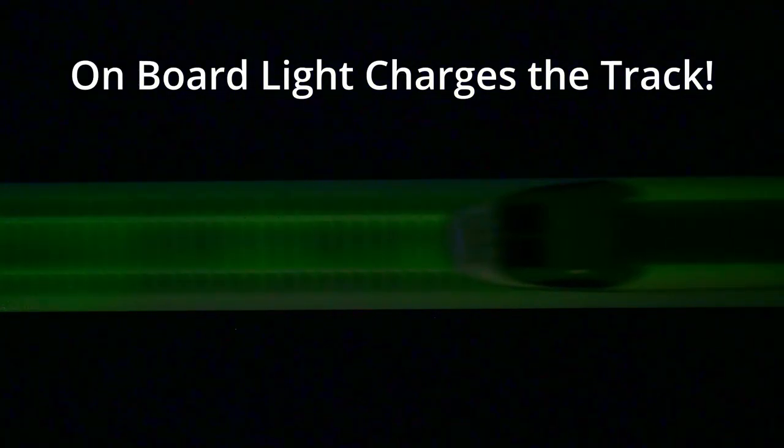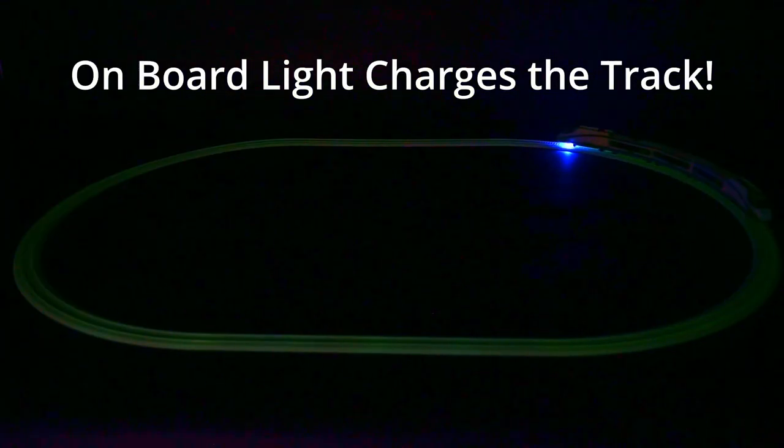Special onboard lighting charges the track as the train goes over it, letting it glow even if you don't have a light source handy to charge it normally.